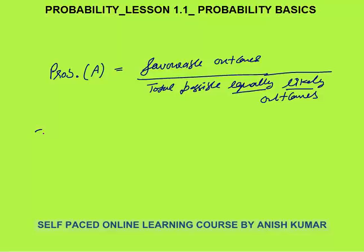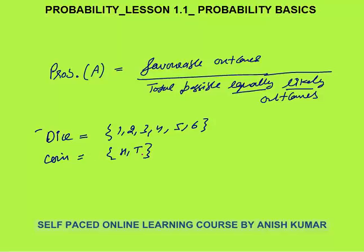For example, when you throw a dice, all outcomes have an equally likely possibility of coming: 1, 2, 3, 4, 5, 6. But the condition is that the dice must be a fair dice. When the dice is fair, all options have equal chances. Same way, when you throw a coin, head and tail have equal chance — that is a fair, unbiased coin.